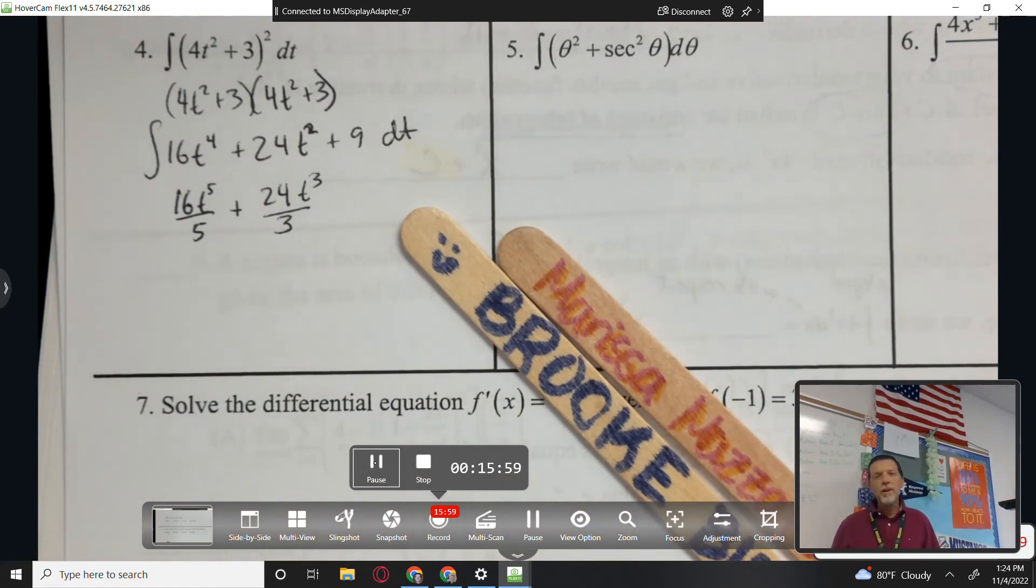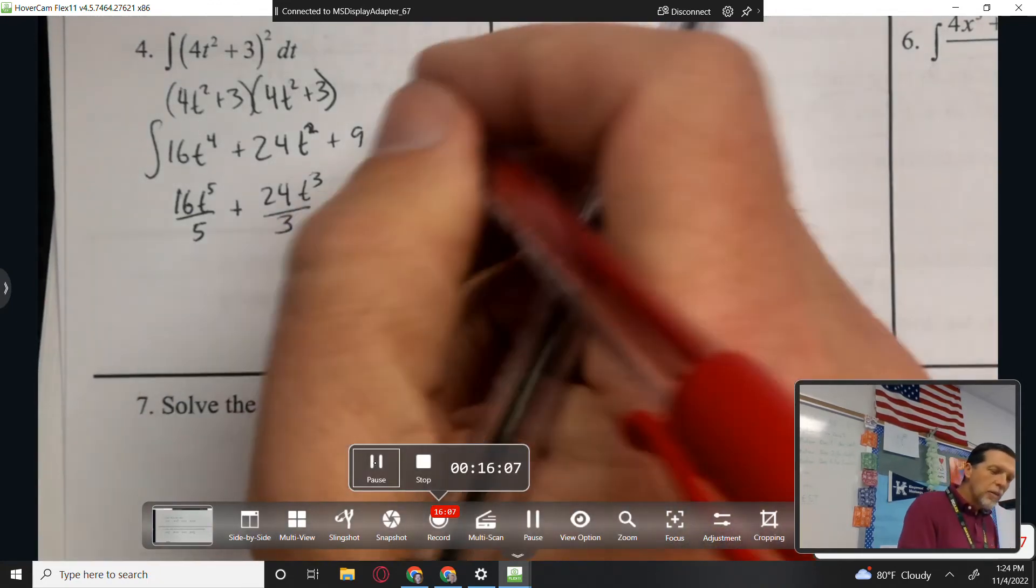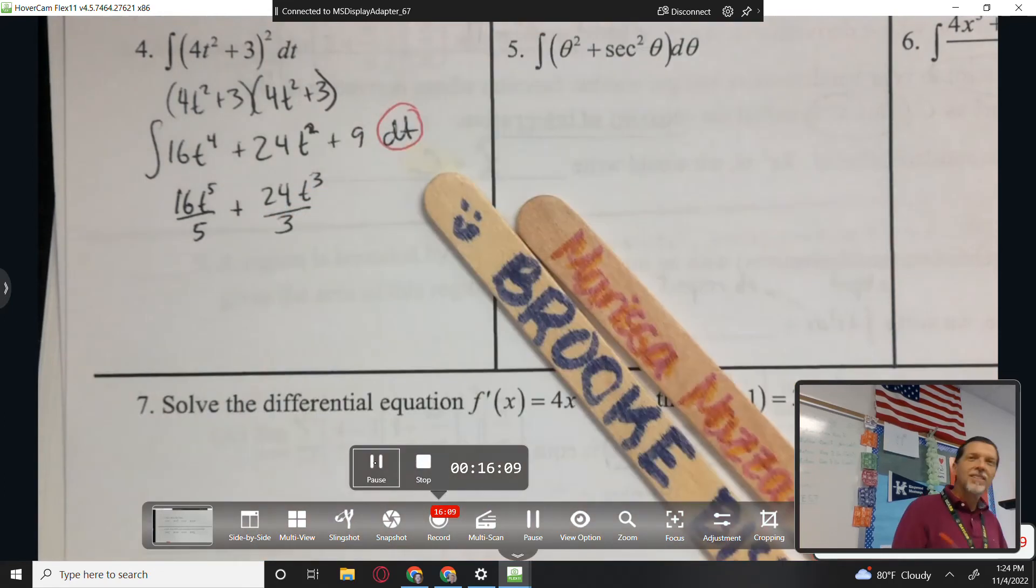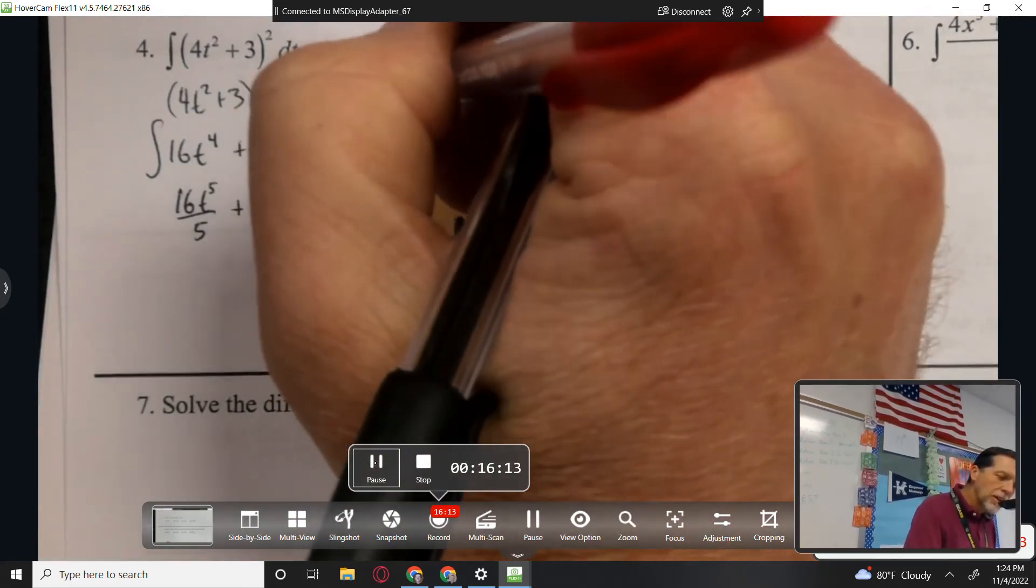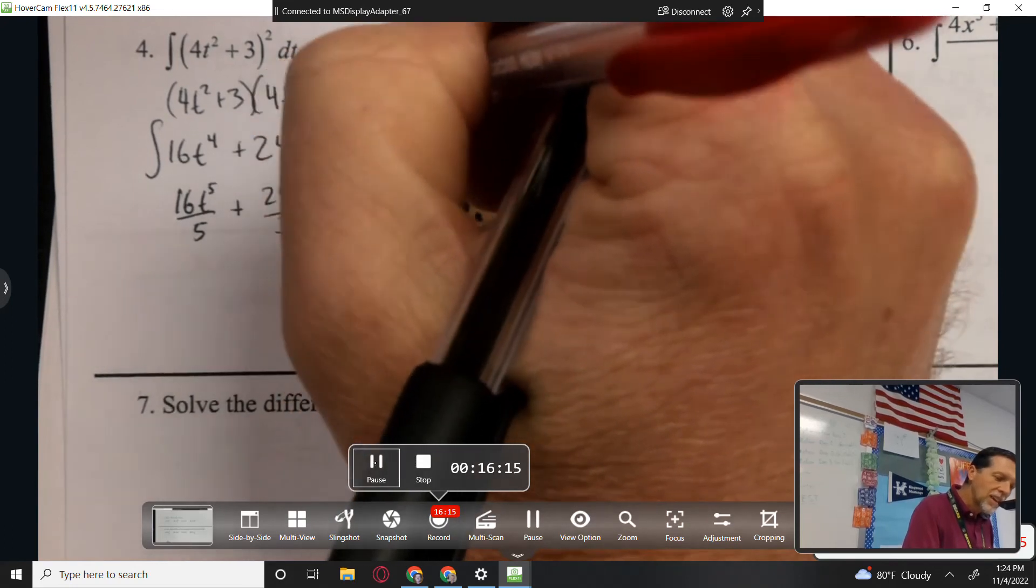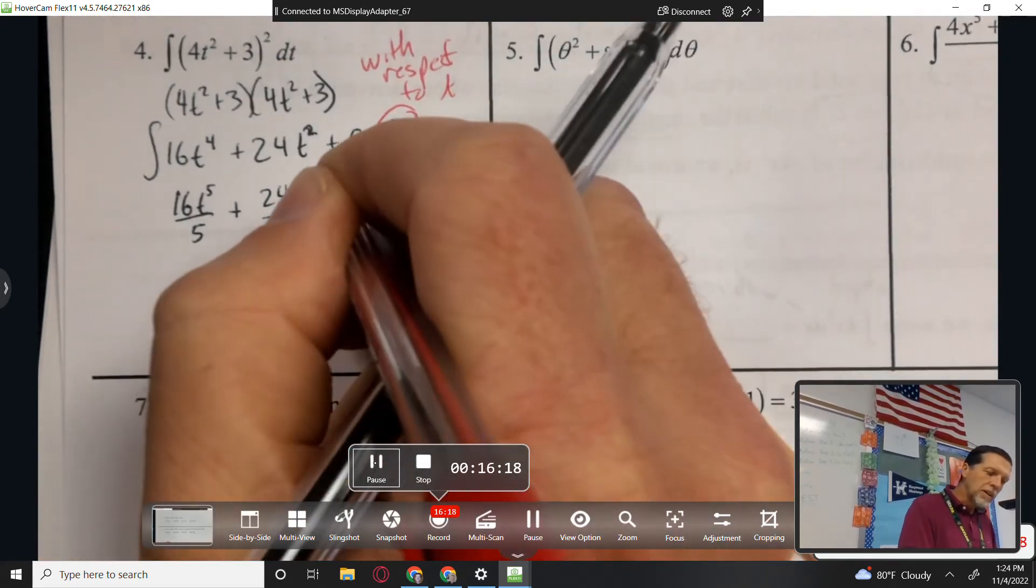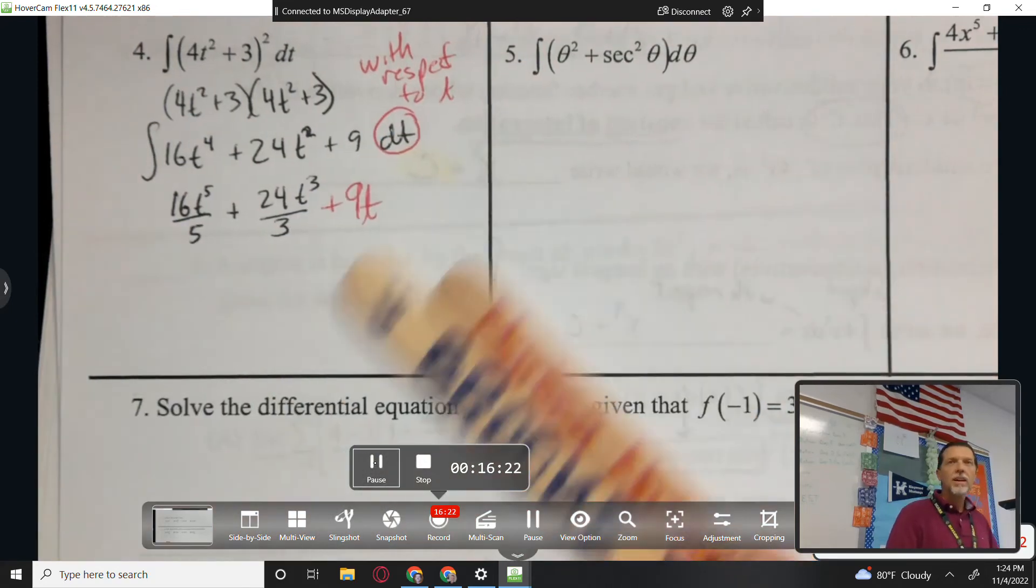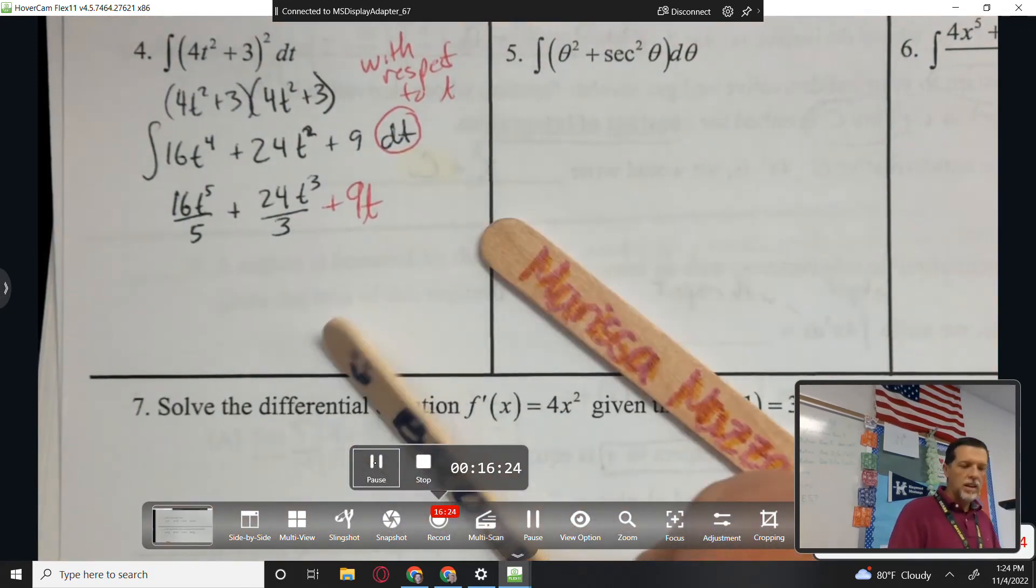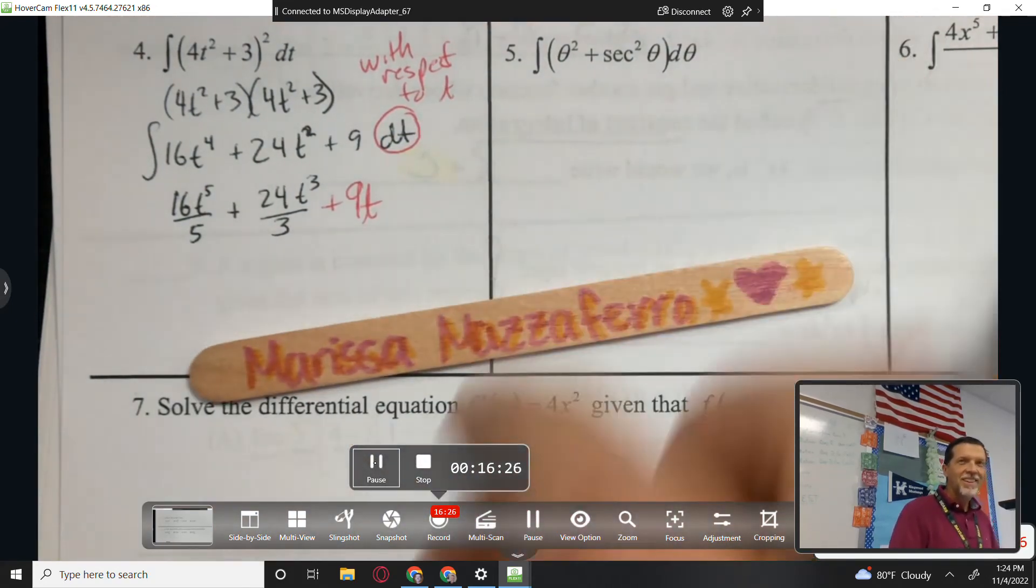Brooke, what about the antiderivative of 9? 9x. Oh, close, sort of. But we're doing this with respect to T. So I'm glad you said that, because if that was dx, it would be 9x. But because it's with respect to T, it's 9T. But not 9D. Yes. Brooke, yes? No? I don't know. Okay.